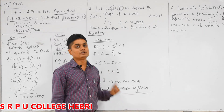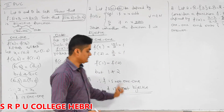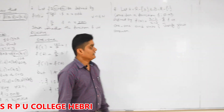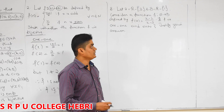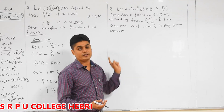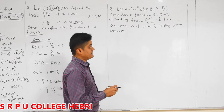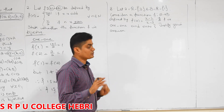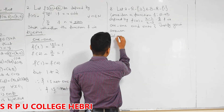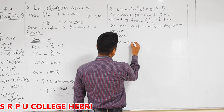Since it is not 1-1, no need to verify onto. If it were 1-1, then we would check onto. Since it is not 1-1, definitively it is not bijective. Next question — this particular question is very important for the next topic also, which is composite function and inverse function. Now I am going to check whether it is 1-1 or not.